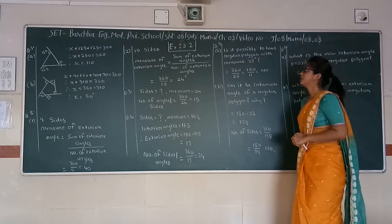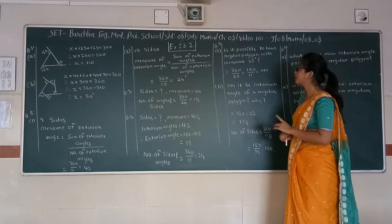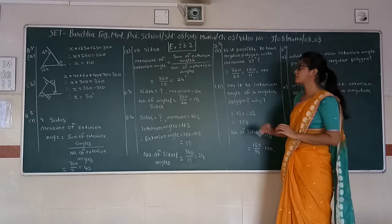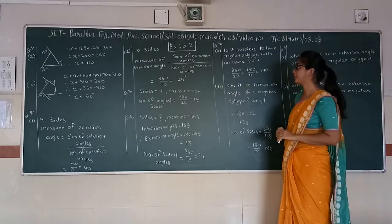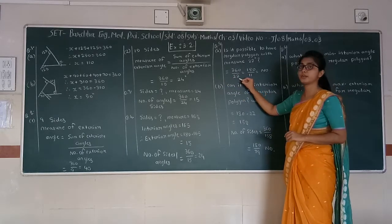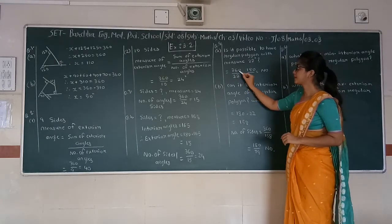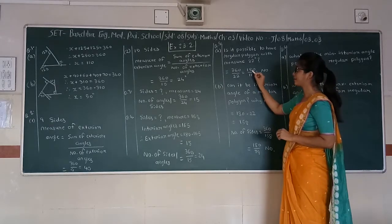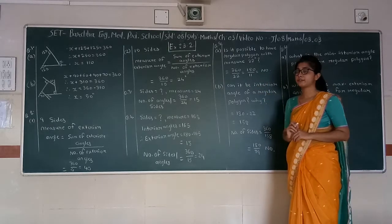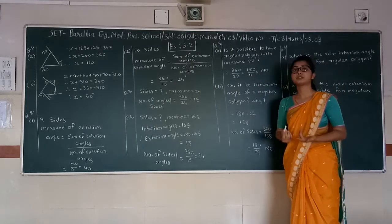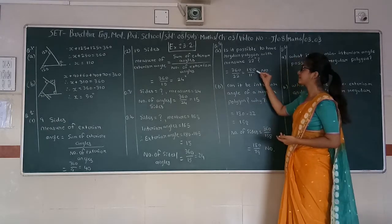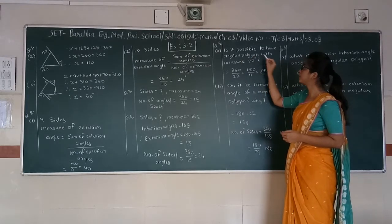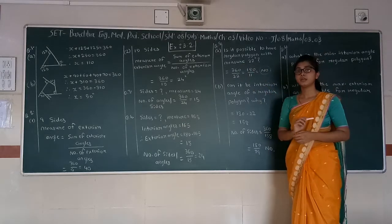Now Question number 5: Is it possible to have a regular polygon with an exterior angle measure of 22 degrees? Using the formula, 360 divided by 22. Both numbers can be divided by 2, which gives 180 and 11. These numbers cannot be further divided, so the result is not a whole number. Therefore, the answer is no — it is not possible to have a regular polygon with an exterior angle of 22 degrees.